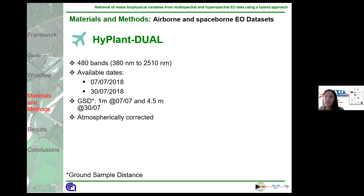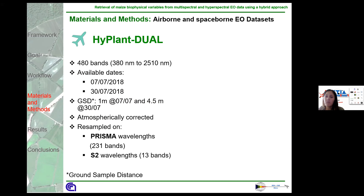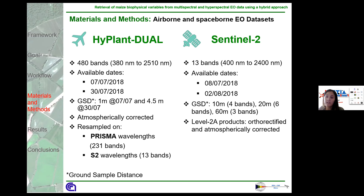All images were atmospherically corrected. This dataset was resampled to Prisma and Sentinel-2 wavelengths. Prisma is an Italian spaceborne sensor of the Italian Space Agency. The second dataset corresponds to images taken by the ESA spaceborne multispectral sensor, commonly known as Sentinel-2, which has a total of 13 bands. The images closest to the field campaign were on the 8th of July and the 2nd of August 2018. The ground sample distance is 10, 20, or 60 meters depending on the band. We used Sentinel-2 Level 2A products, which are already orthorectified and atmospherically corrected. At the end, three datasets were used: HyBird Dual resampled to Prisma-like and Sentinel-2-like wavelengths, and the real Sentinel-2.